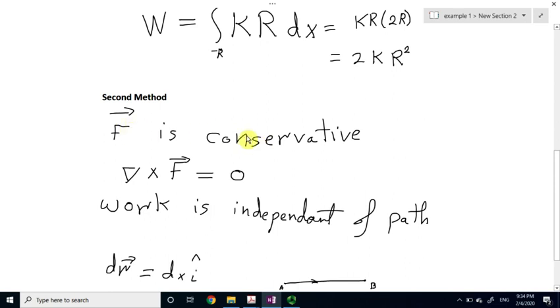So, F is conservative. Now, you can mathematically prove it by taking the curl operator acting on the force F. And, you can prove that the answer is 0, which is a proof that the force is conservative. So, now, given that the force is conservative, we know that, for a conservative force, the work is independent of the path taken.